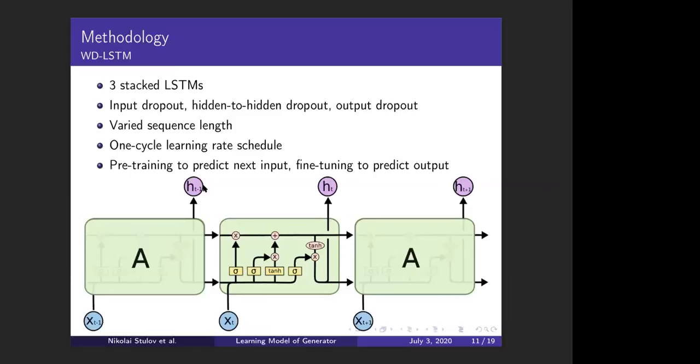We also use a clever learning schedule, which is we first pre-train our neural network to predict the next input. After it learns the physics of predicting the next voltages based on previous voltages, we fine-tune it. We change its output and we fine-tune it to predict the powers.